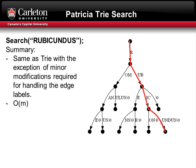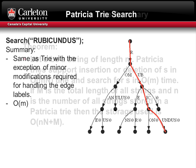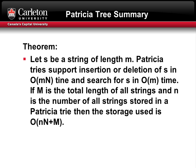The last operation I'm going to discuss for the Patricia tree is search, which is the same as the trie with minor modifications for handling edge labels. In this example, we search for the word rubicundus: r-u-b-i-c-u-n-d-u-s null terminator. Rubicundus is a word in this Patricia tree and we can return true. This has the same running time as the trie: O(M), where M is the size of the word. In summary, I discussed insertion, deletion, and search. For storage: if M is the total length of all strings and N is the number of strings stored in a Patricia tree, then storage uses O(N · (N + M)), where N is the size of the alphabet.